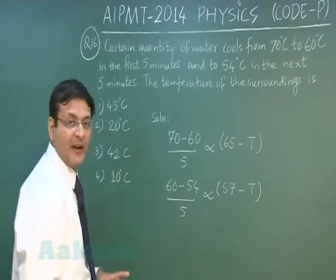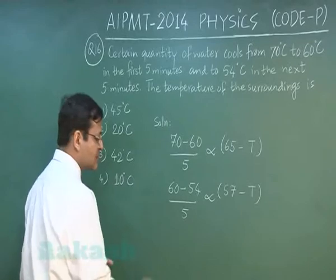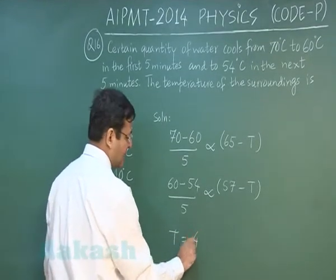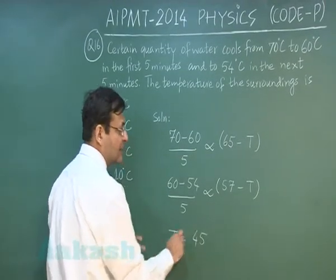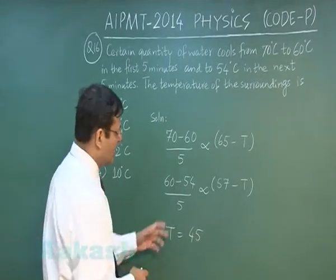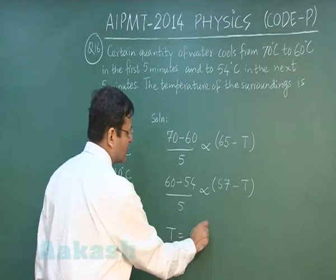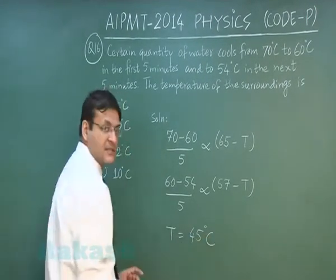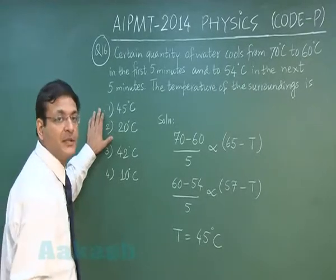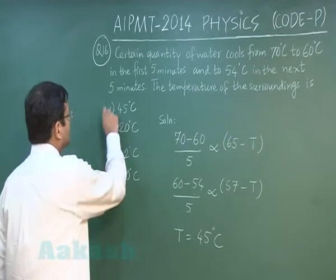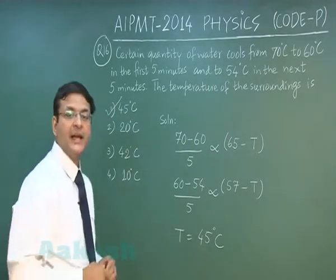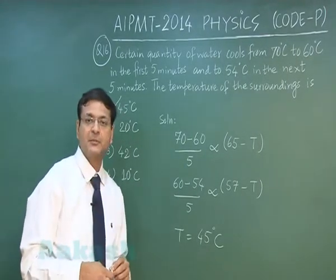Dividing these two equations gives the expression for the unknown T, the temperature of the surroundings, which comes out to be 45°C. So the correct option is the first one, 45°C. That explains question number 16.